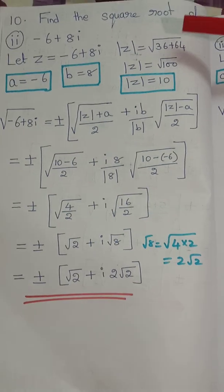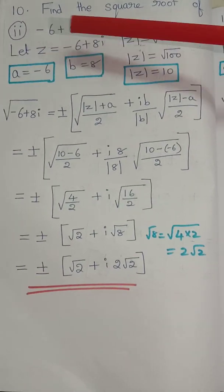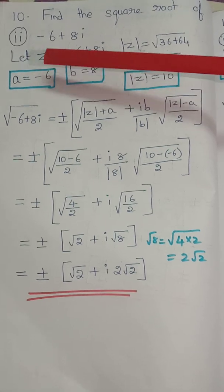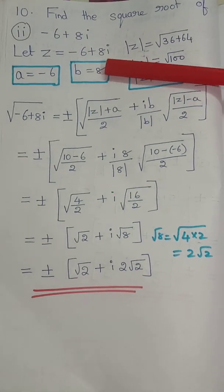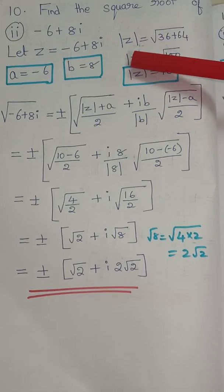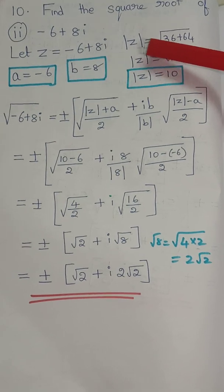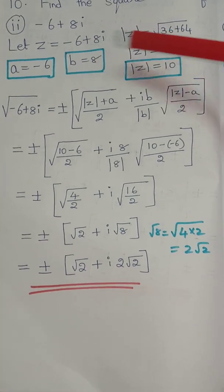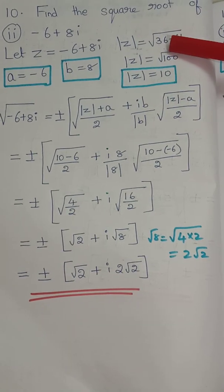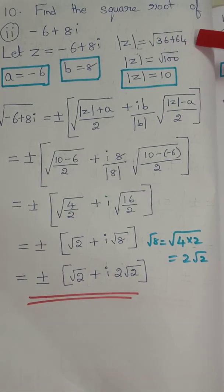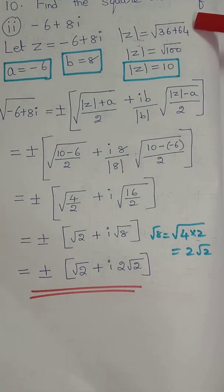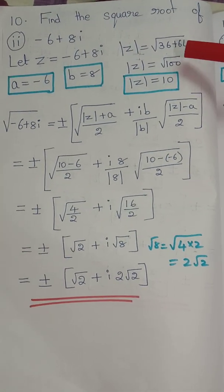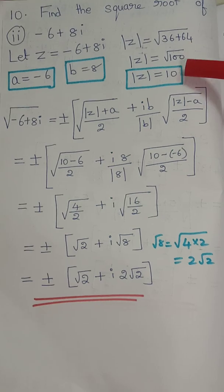Find the square root of minus 6 plus 8i. So z equals minus 6 plus 8i. For the modulus of z: minus 6 squared is 36, and 8 squared is 64. Modulus of z equals square root of 36 plus 64, which is root of 100, equal to 10.